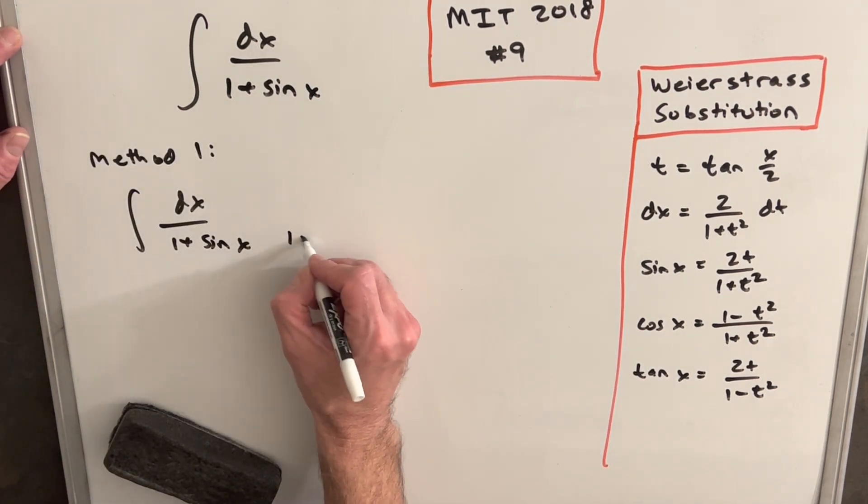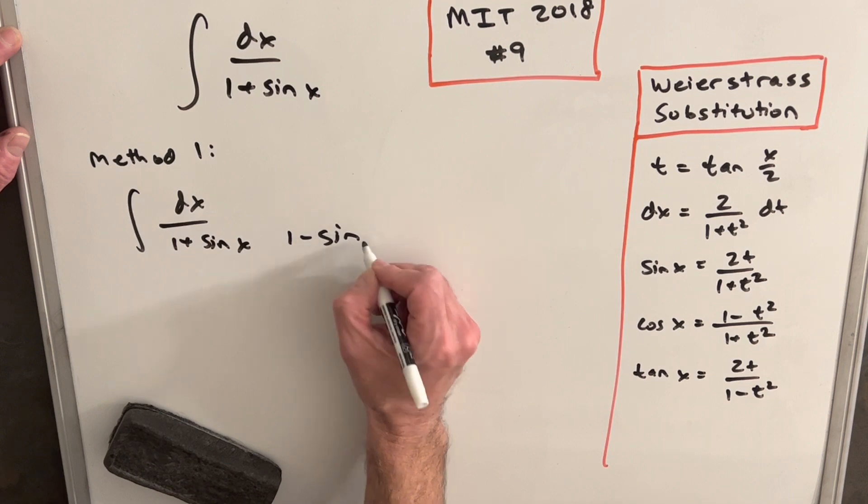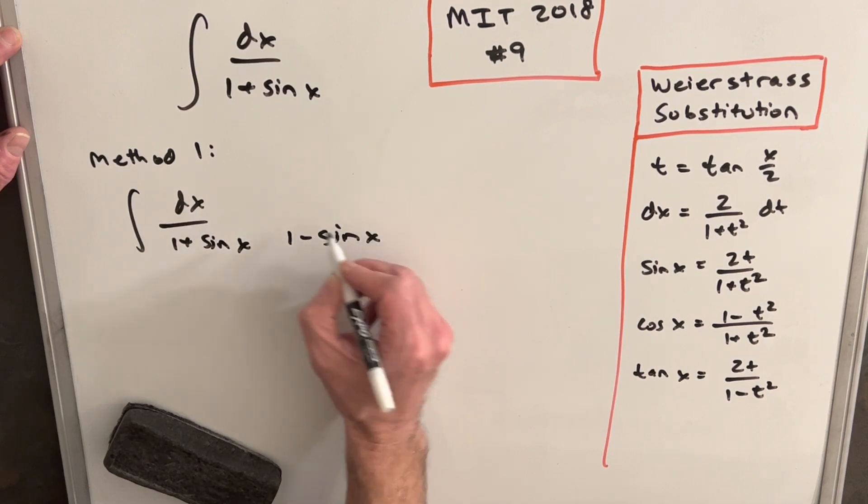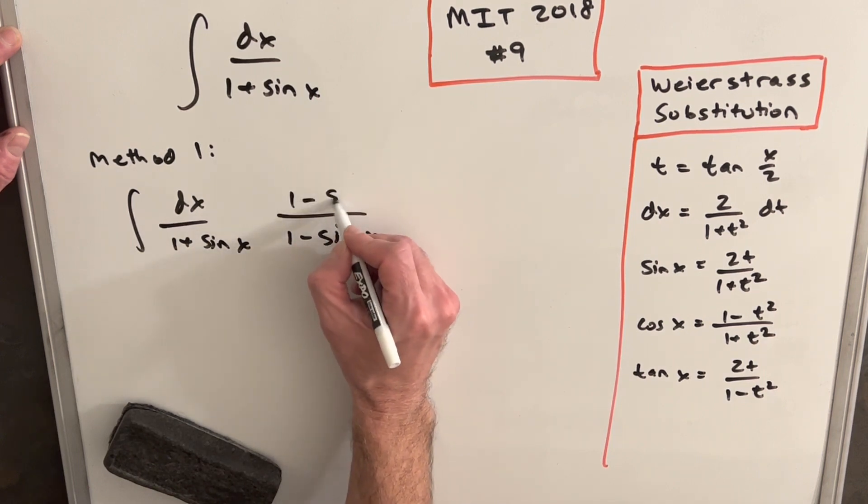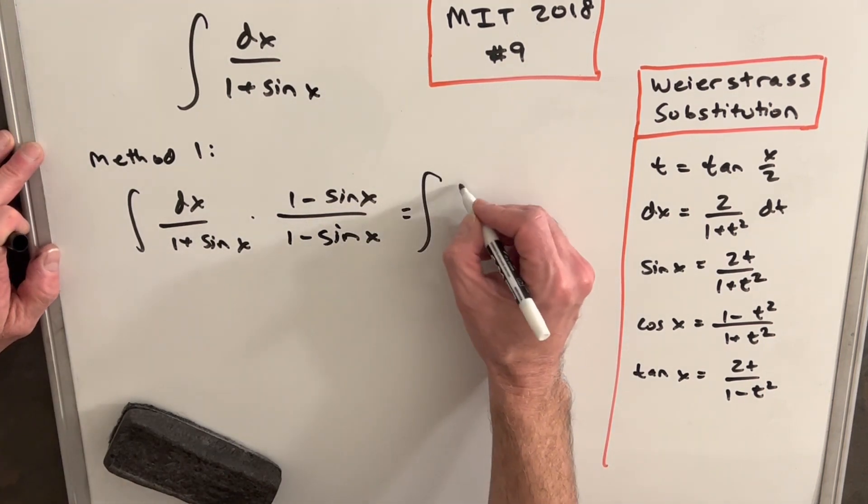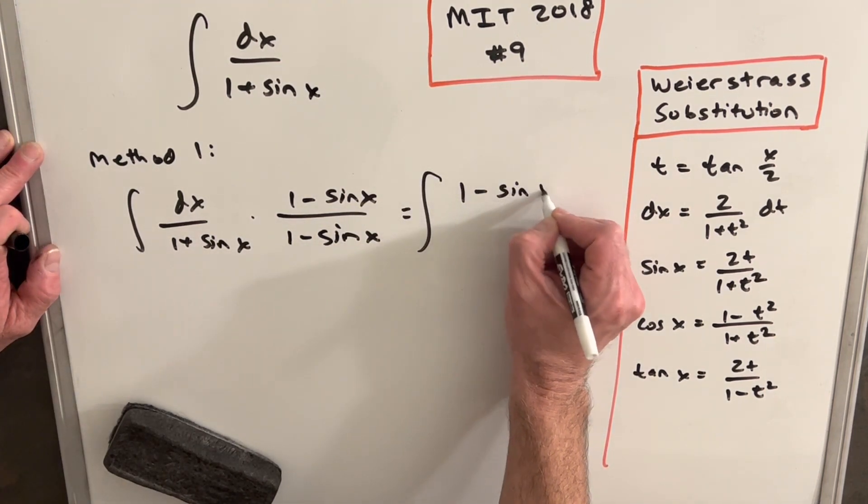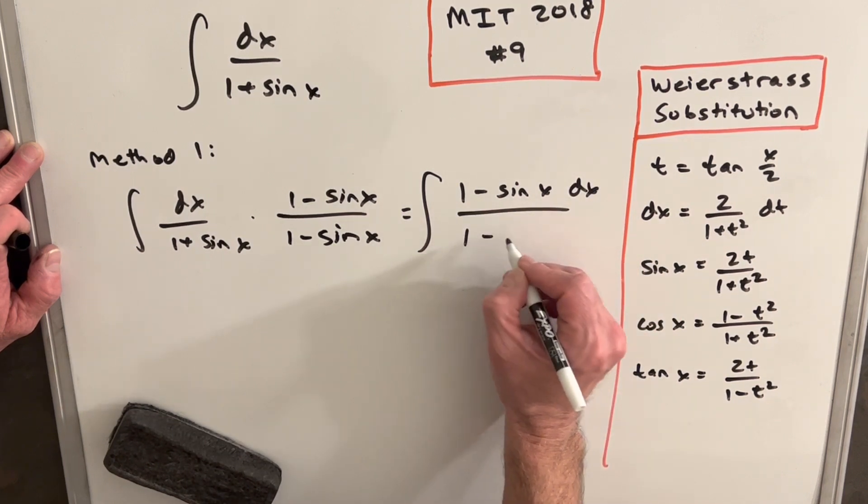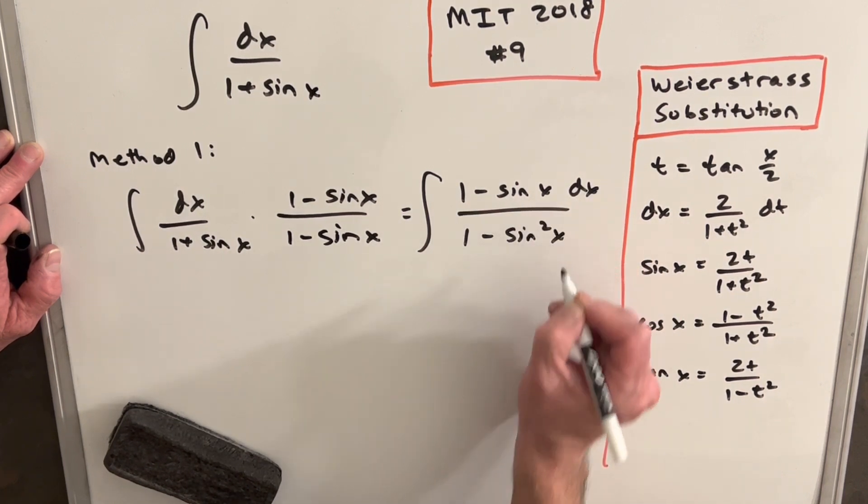So for my first method, we're just going to take this and multiply the numerator and denominator by one minus sine x. This is going to give us one minus sine x dx over one minus sine squared x.